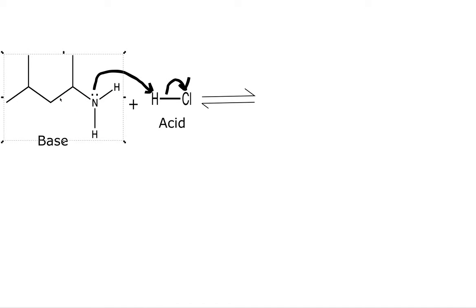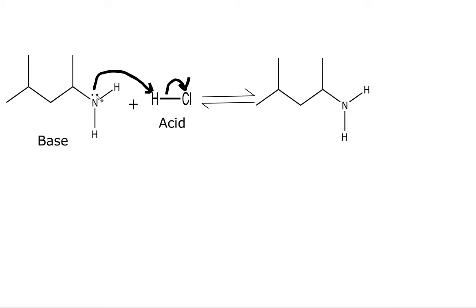To save time, let me duplicate this. We had this lone pair here and we accepted this proton, so let's show that by drawing a bond line. Now we have a proton right here. Let's check our charge — this nitrogen has a positive formal charge. This nitrogen had no charge at all, it was neutral, and we gained a proton. Protons are positively charged, so this should be a positive.